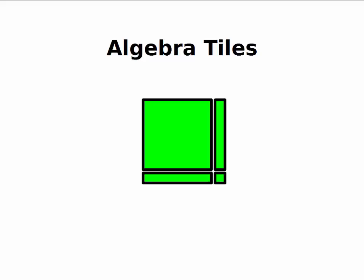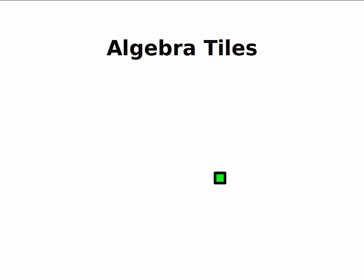Using algebra tiles for multiplying polynomials is all about area. So let's talk about these things. Let's focus on the small square first. The small square, we're going to consider that the side has a length of one unit. Since it's a square, the bottom is also one unit. So the area is one square unit. We're going to use these to represent one.